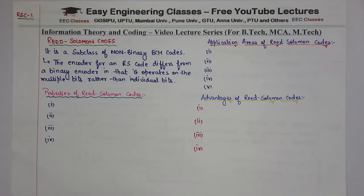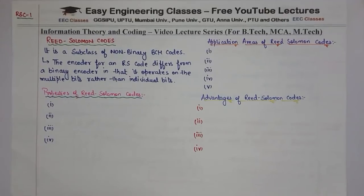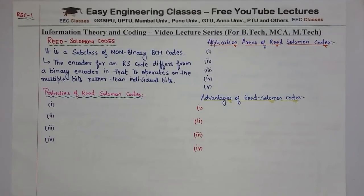The encoder for a Reed Solomon Code differs from a binary encoder in that it operates on multiple bits rather than individual bits. So the first difference between Reed Solomon and normal binary codes is that Reed Solomon's encoder is multiple-bits-based, while normal binary encoders are single-bit-based.